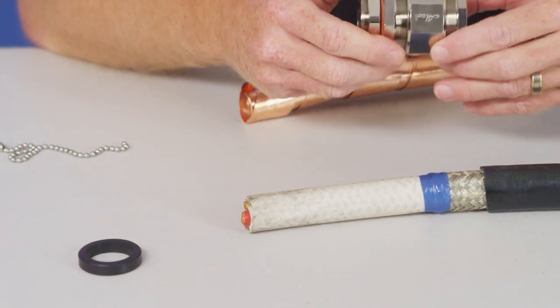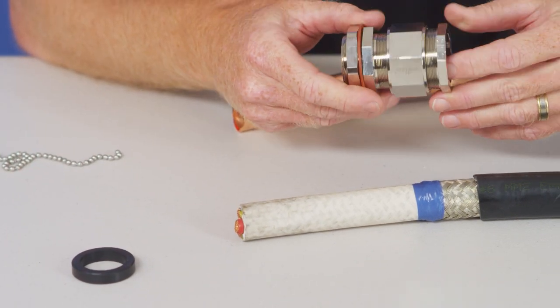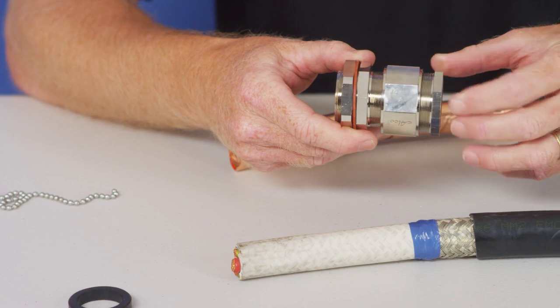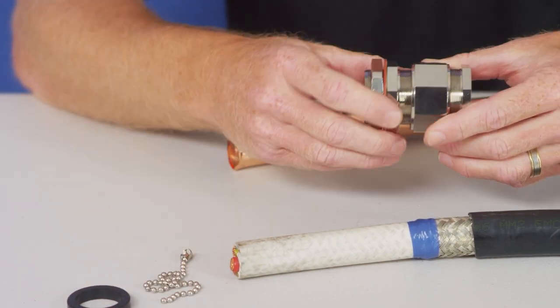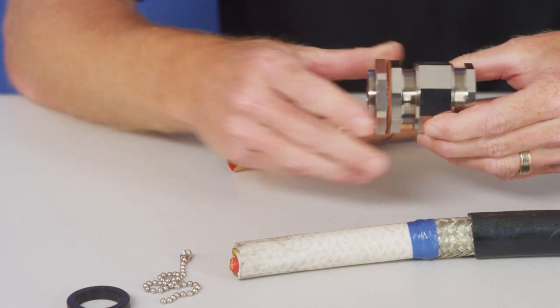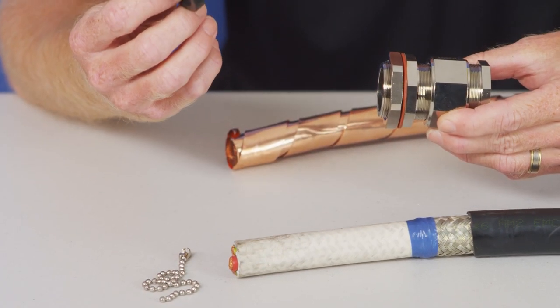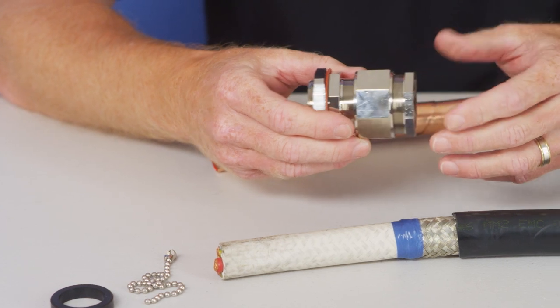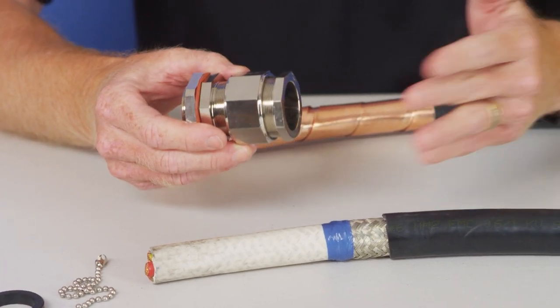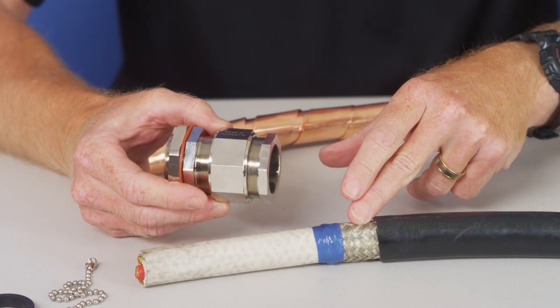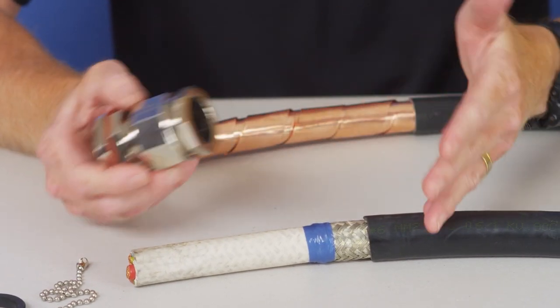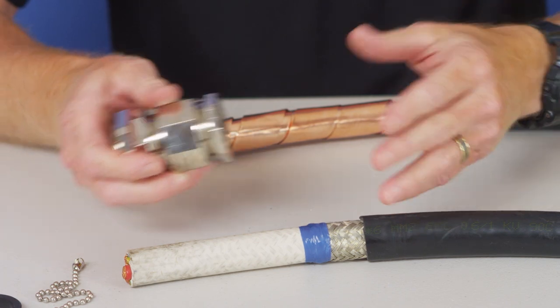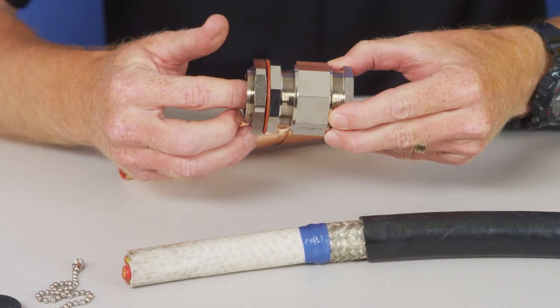The second style of EMC gland that we're going to show today is the Alco Premium style. Now this one here comes in several different parts and it also comes with two seals. So when you go to use the gland you've got to determine the outside diameter, the over braid diameter and then you select the right type of gland. And obviously we've prepared this cable earlier and we've determined what gland we use.